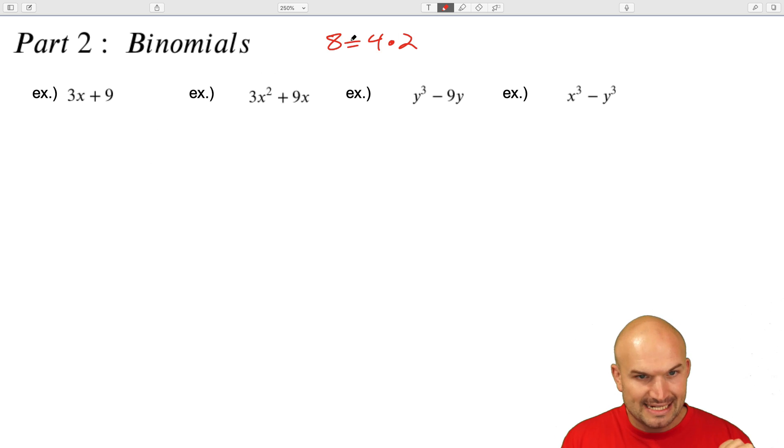If you think about breaking down eight, how did you break down eight into four times two? Well, what you did is you found a number that evenly divided into eight. And let's say you found that number to be four. Well, four evenly divides an eight two times. We can rewrite this product as a division problem. Eight divided by four equals two.